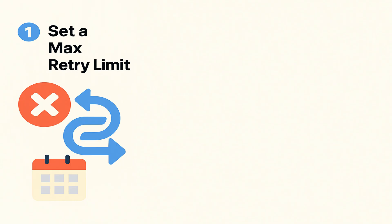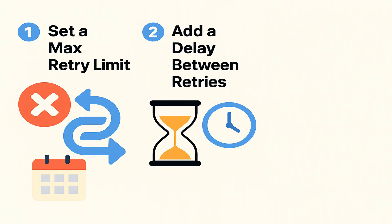First, set a limit — don't keep retrying forever. For example, retry only 2 or 3 times max, otherwise you will overload the system. And if the other service is down, you will just make things worse. After one failed attempt, wait a bit before trying again. This is called backoff — don't just fire the next retry immediately.